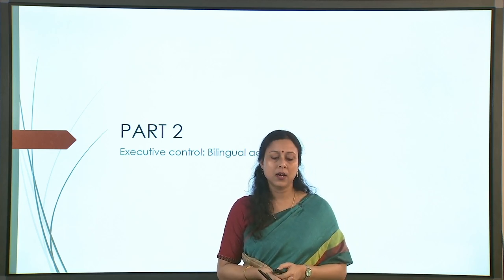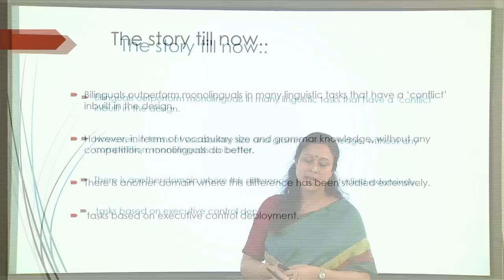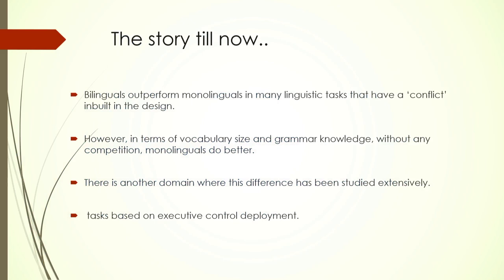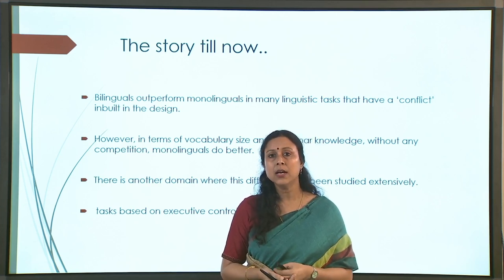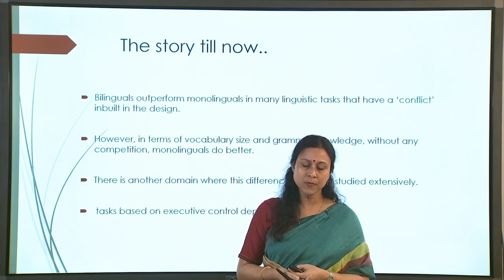Now we will move on to executive control mechanisms. As a quick recap: bilinguals have been found to outperform monolinguals in many linguistic tasks, especially those that have an amount of conflict built into them - any kind of conflict, such as between grammaticality and semantic aspects. If there is any kind of conflict inbuilt, then the bilingual advantage will be visible - meaning bilinguals doing better on the same task as opposed to monolinguals.